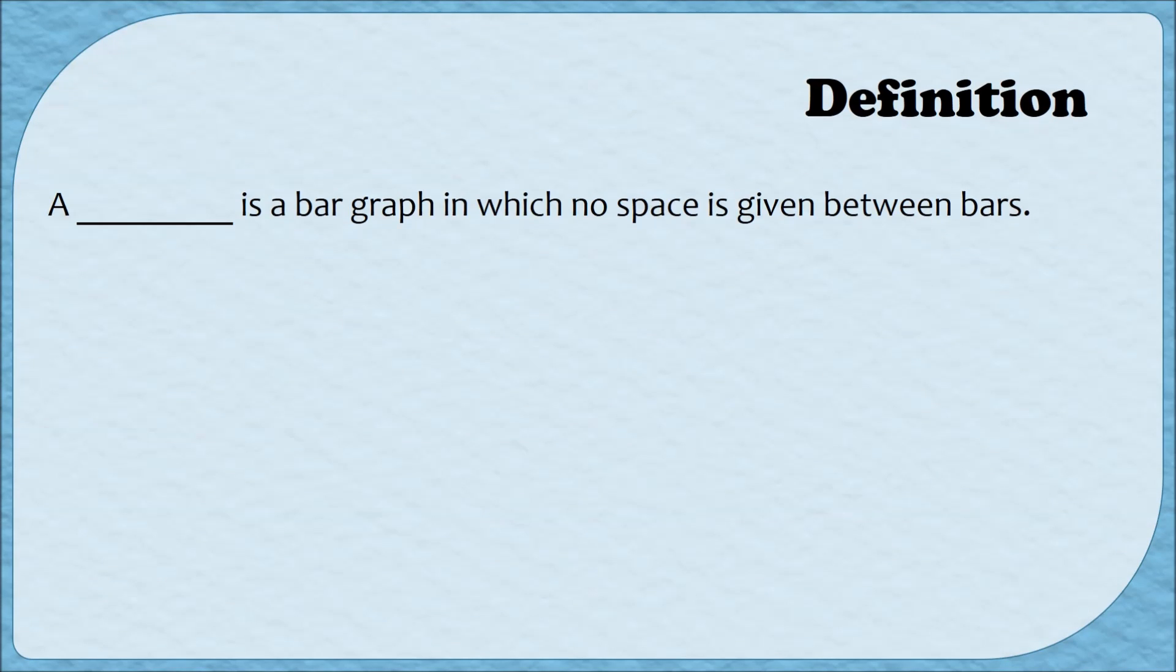So what is a histogram? Well, a histogram is a bar graph in which there's no space given between the bars. Ideally, a histogram should be used for continuous or grouped data, but you can also make it for ungrouped data, which is what we're going to do in this video. In the next video, we'll make histograms for grouped data.